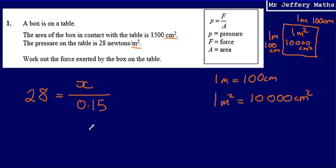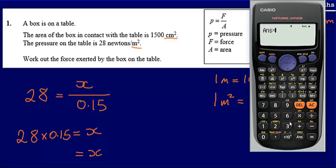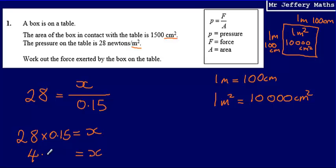And then solving this, multiplying by 0.15, I'm going to get X is equal to 28 multiplied by 0.15. And that is going to give me an answer of 4.2, and that's newtons.